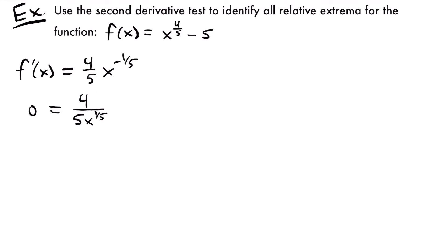However, this first derivative is not continuous at a particular point. Setting the denominator equal to zero: 5x^(1/5) = 0, only x = 0 makes this true. So the derivative is not defined at x = 0, meaning the original function is not differentiable there. Critical values include not only where the slope equals zero, but also where the function is not differentiable. So x = 0 is our critical value.